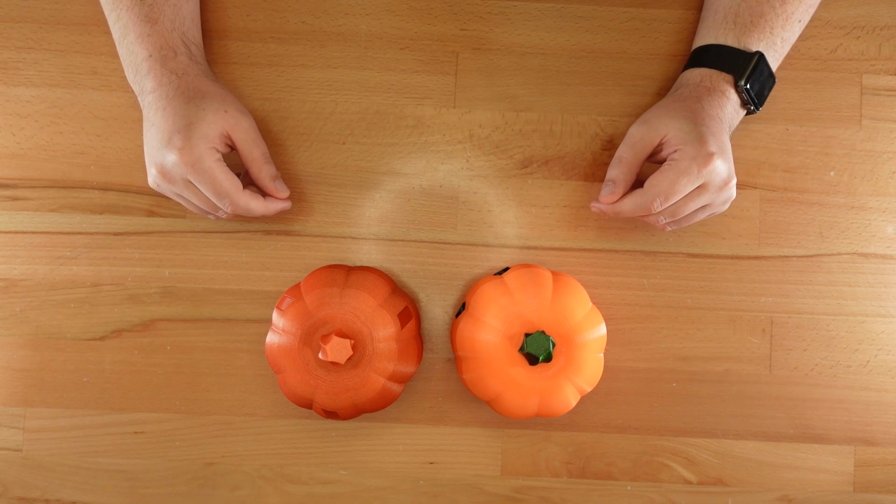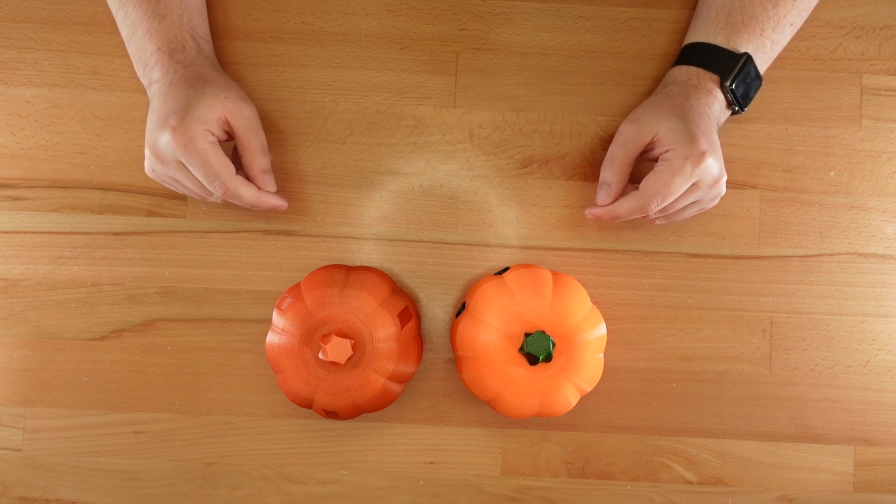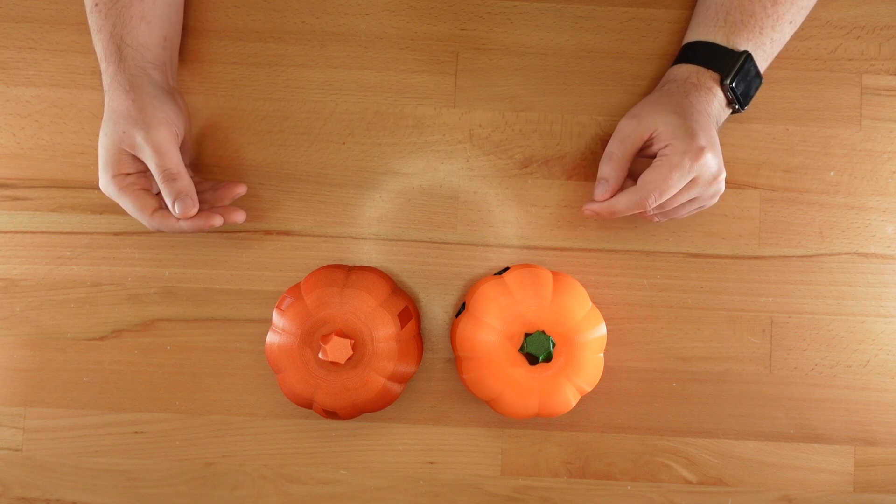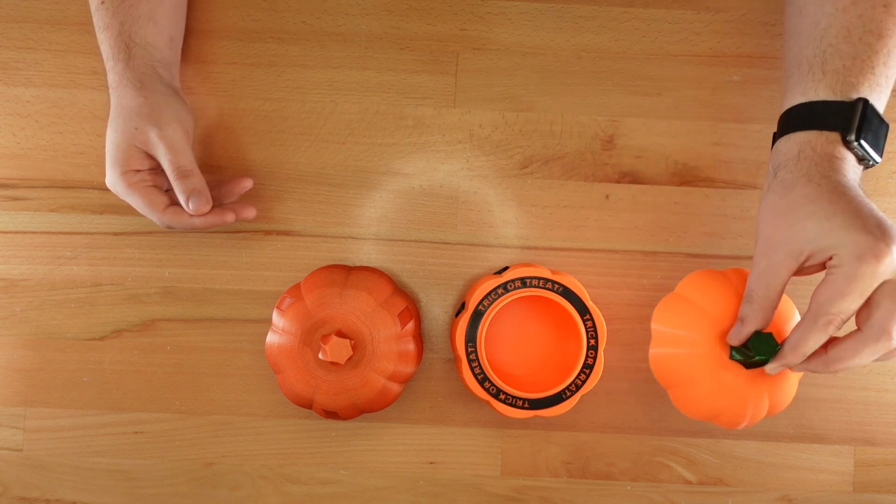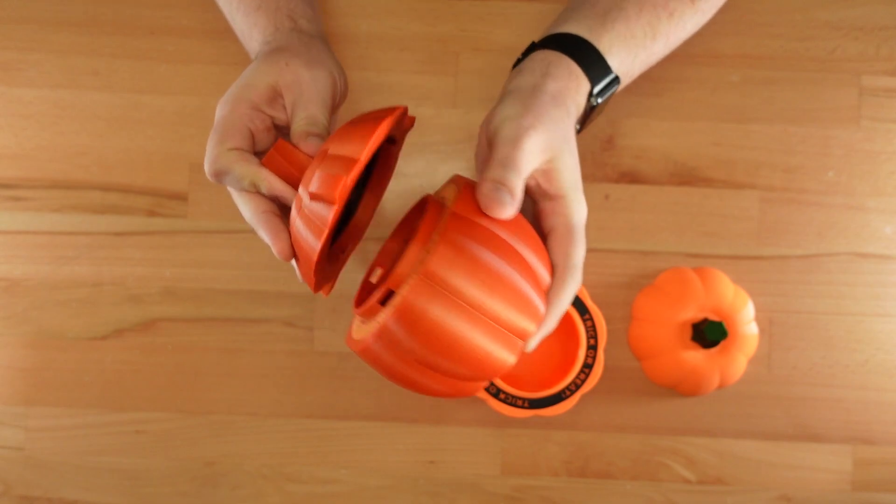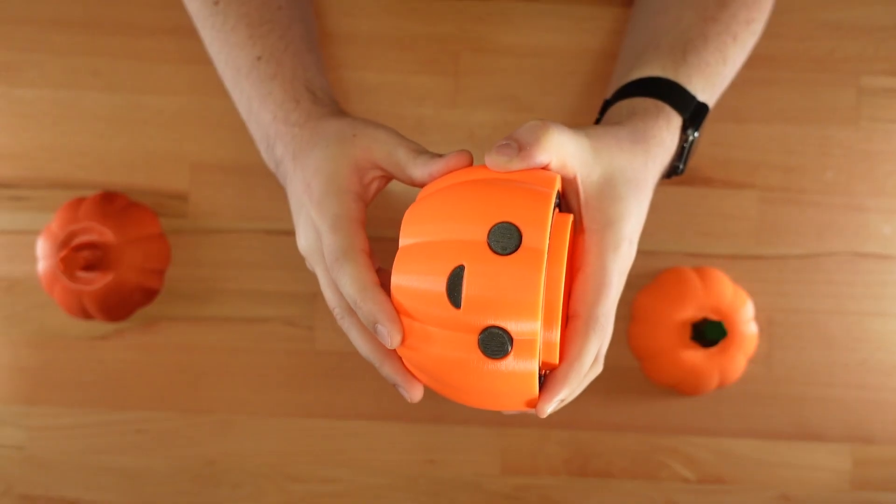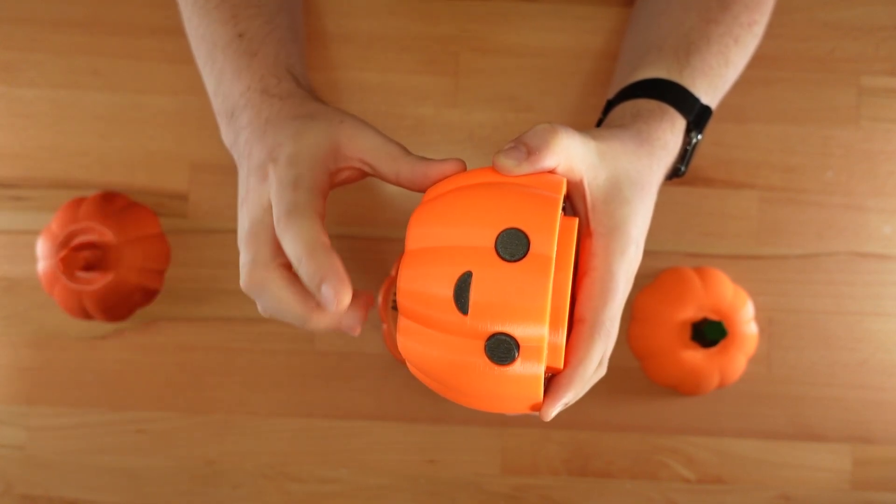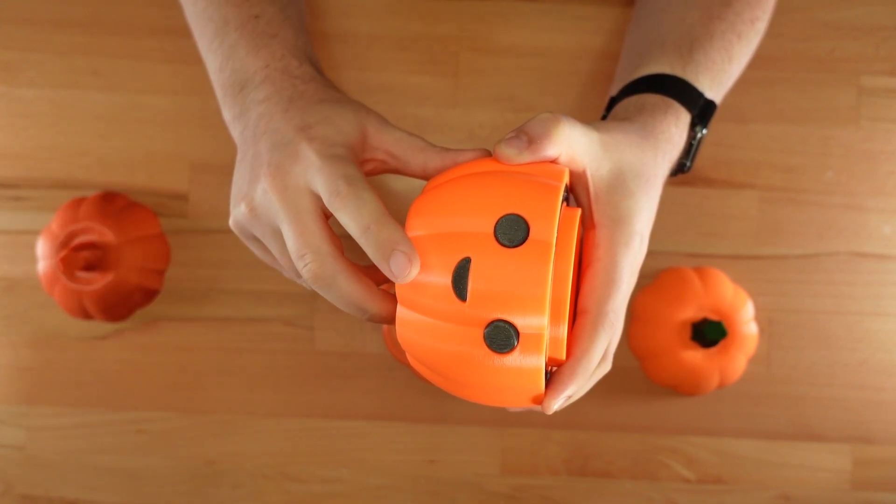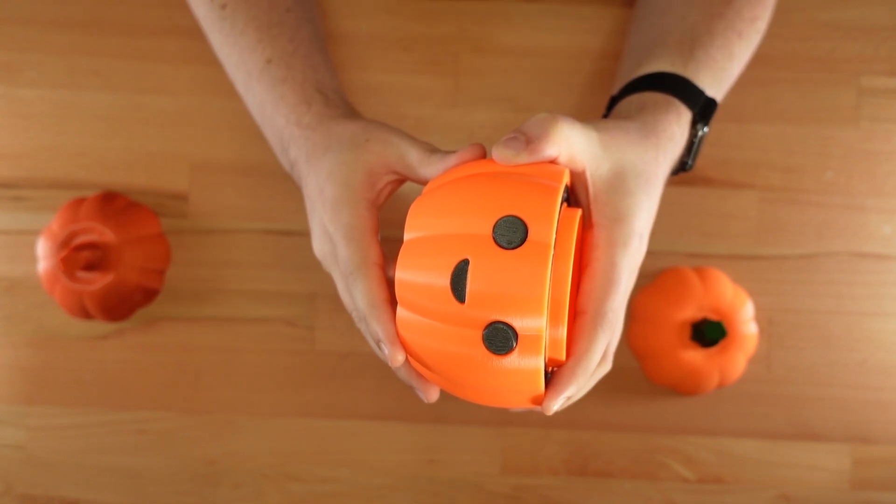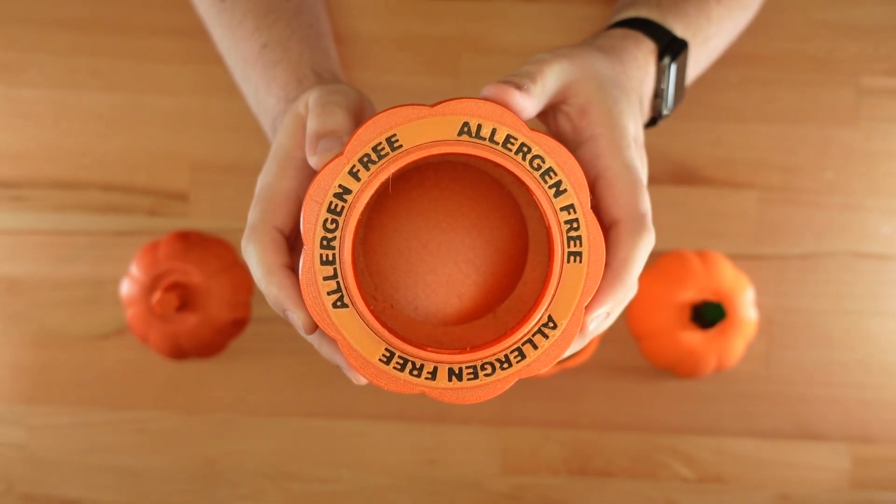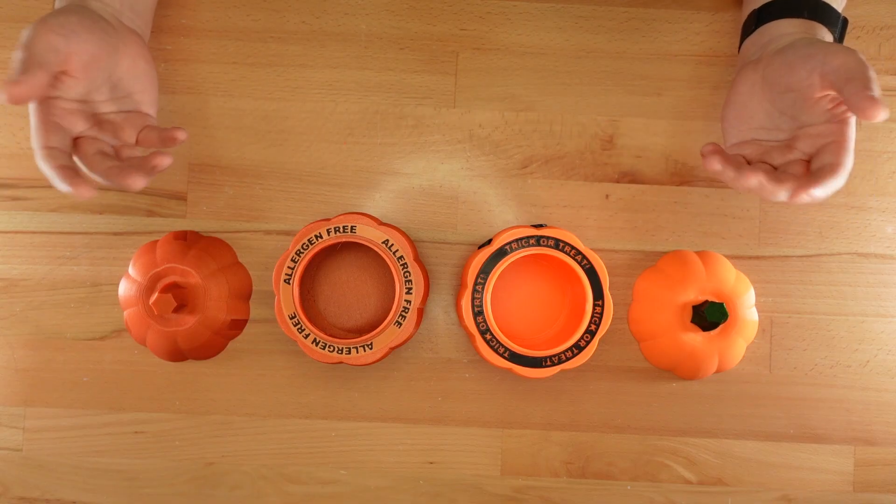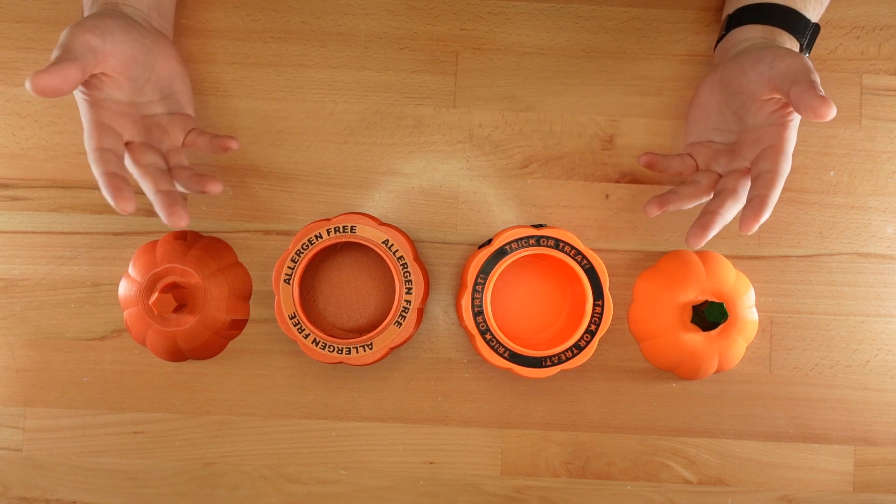Thanks for sticking around to the end. Since you did, how about a couple bonus updates? Both of these are requests that were sent in from viewers, and they apply to the Simple Open Mushroom, and the Twist Lock Open Mushroom. If you printed the smile version of the base for either of these designs, you can now print inserts for the eyes and the mouth. These really make the features pop. I've also made a new ring insert. This one says allergen-free. It might be useful during trick-or-treating. All right, that's all the updates for now. I'll see you in two weeks.